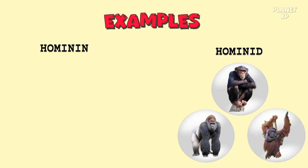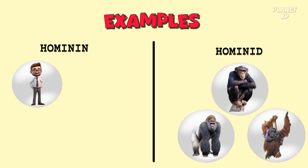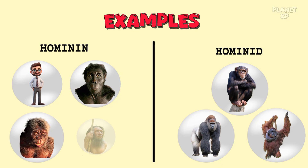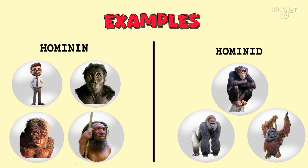Chimpanzees, gorillas, and orangutans are all examples of hominids. Modern humans, Homo erectus, and Australopithecus afarensis are all examples of hominins.